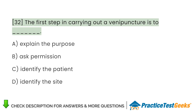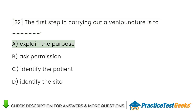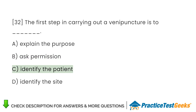The first step in carrying out a venipuncture is to A. Explain the purpose. B. Ask permission. C. Identify the patient. D. Identify the site.